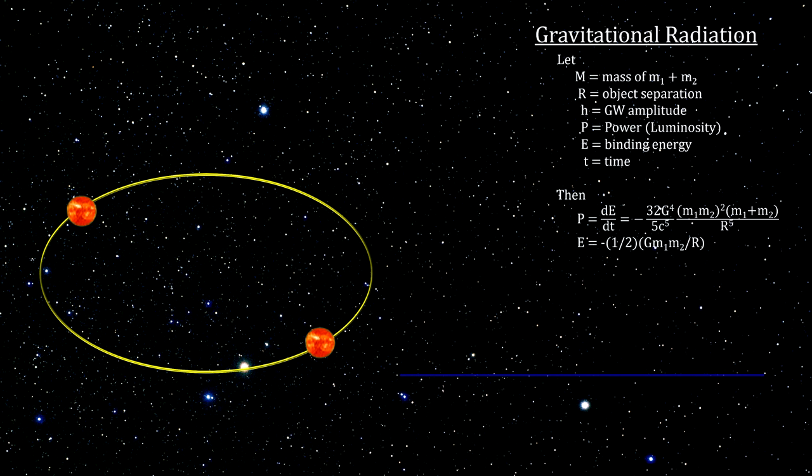Newton and Kepler provided the mechanics for understanding what happens to the orbit when gravitational energy is lost. Because binding energy is negative, a loss of energy will make it a larger negative. This has the effect of reducing the distance between the two objects.